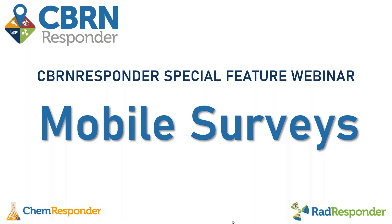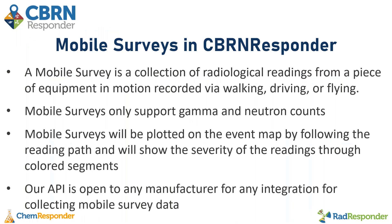The mobile survey special feature webinar will cover how to create mobile surveys and readings, how to assess them, and how to use the event map to visually see the mobile survey path. A mobile survey is a collection of radiological readings from a piece of equipment that is in motion, recorded via walking, driving, or flying. Mobile surveys only support gamma and neutron counts. Mobile surveys will be plotted on the event map by following the reading path and will show the severity of the readings through colored segments. Our API is open to any manufacturer for any integration for collecting mobile survey data.